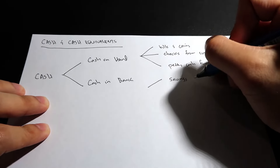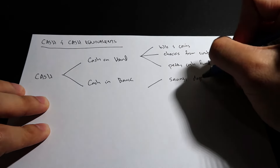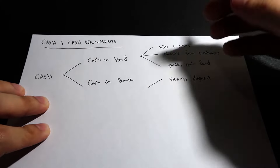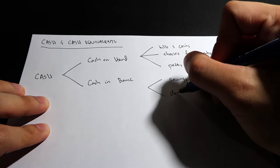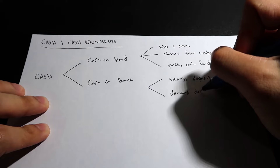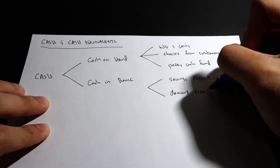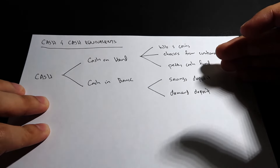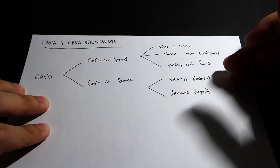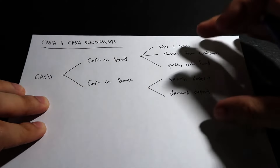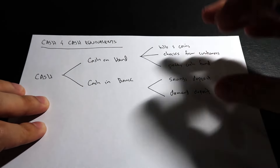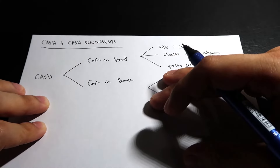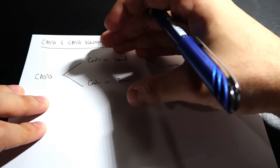Cash in bank includes: first, savings deposit or savings account; and second, demand deposit, which is also your checking account or current account. If these are given in a problem, you include them as part of cash. So again, for cash you have two types: cash on hand and cash in bank.